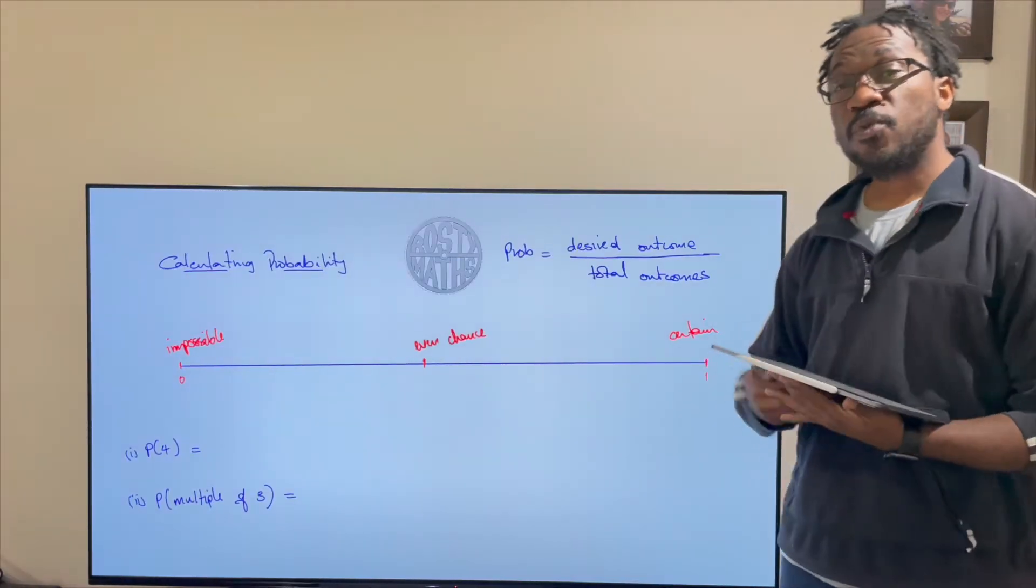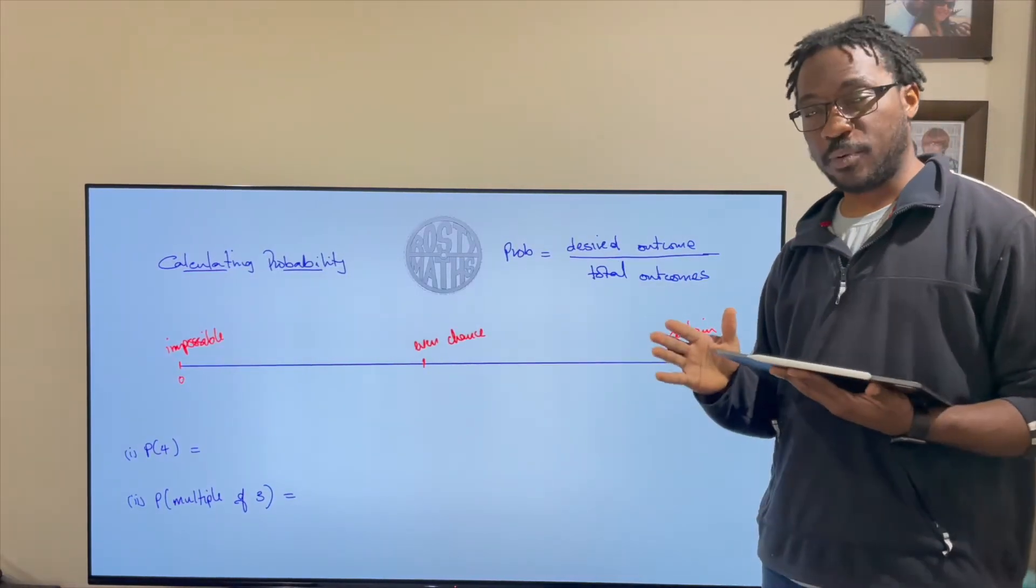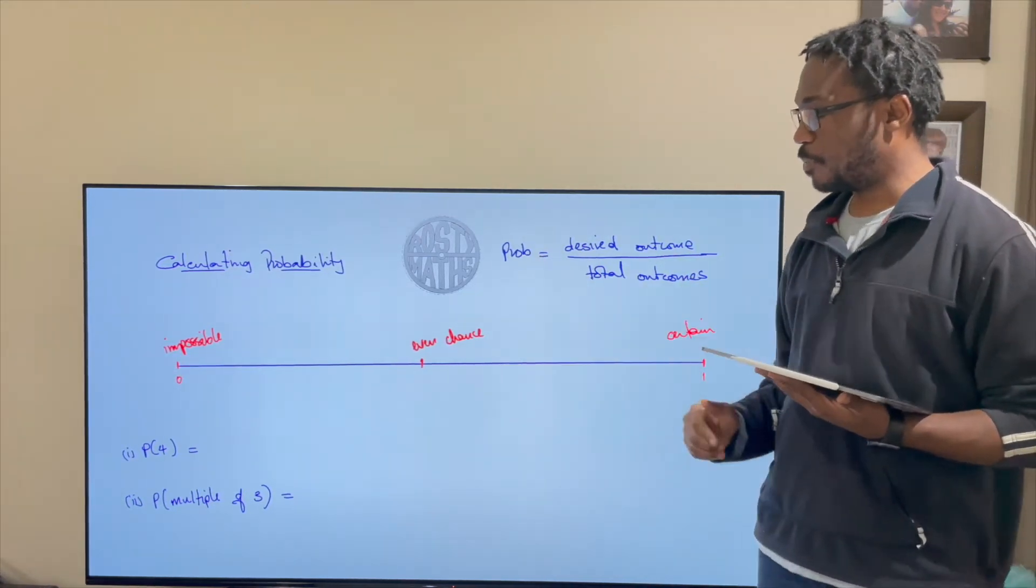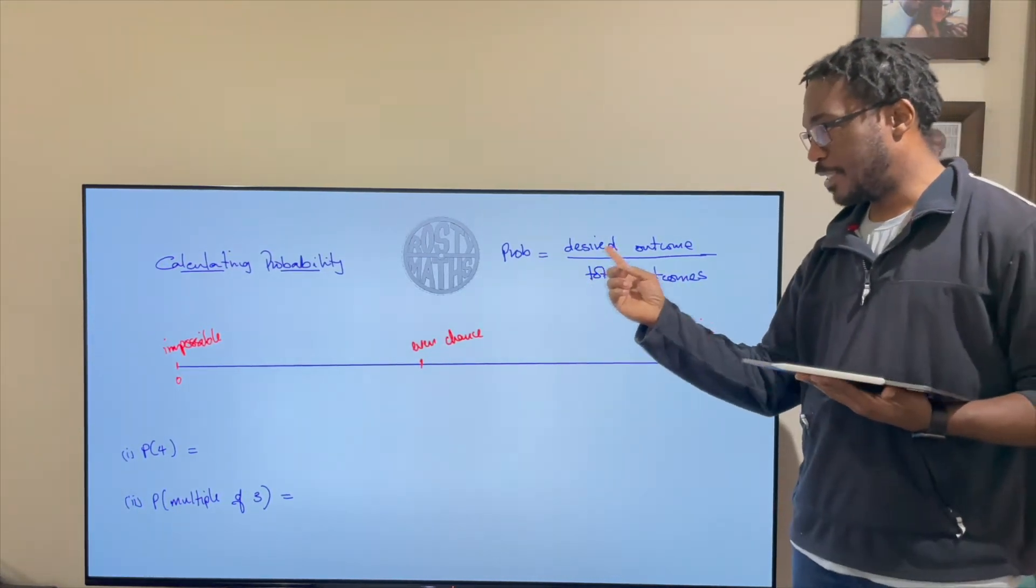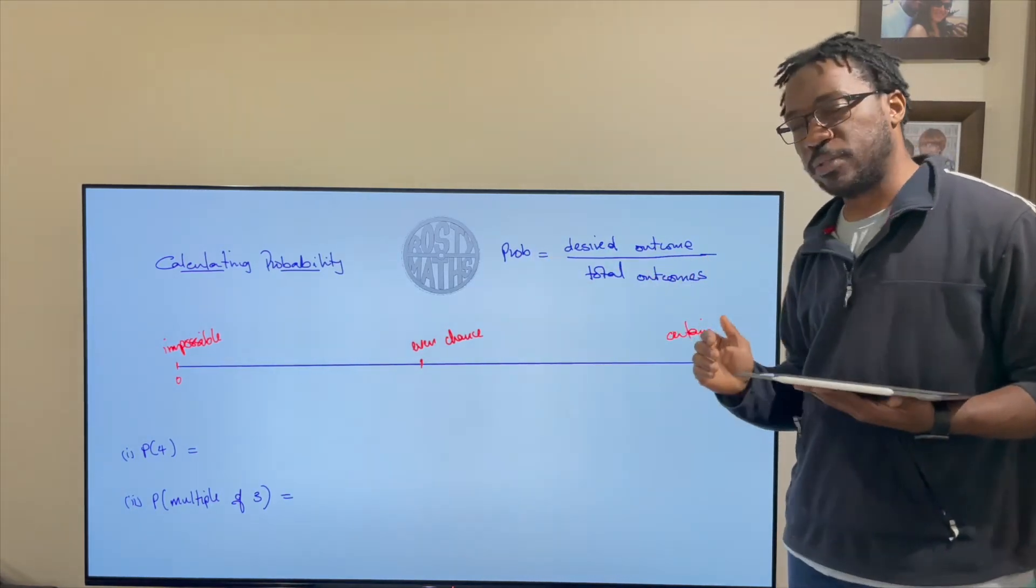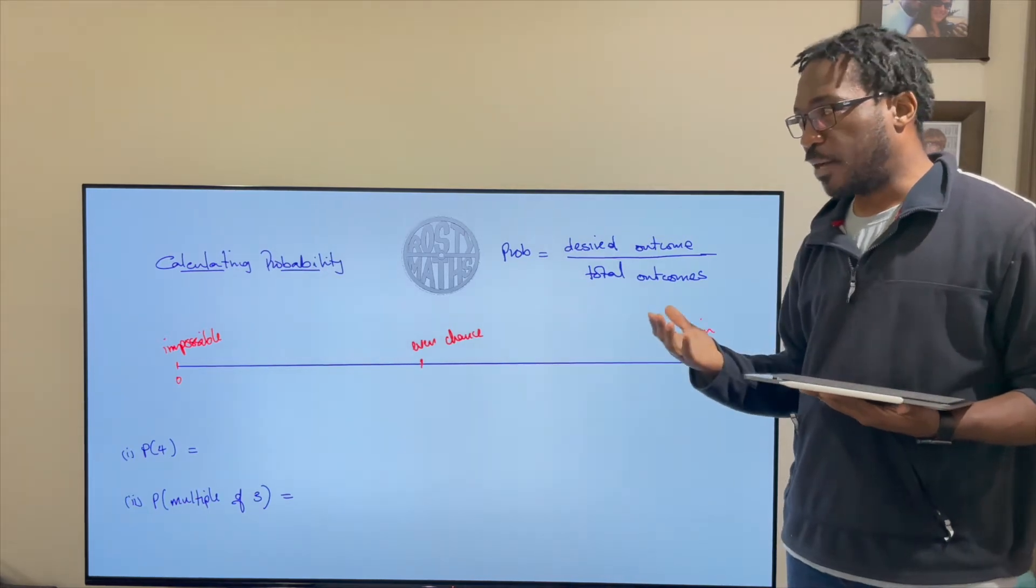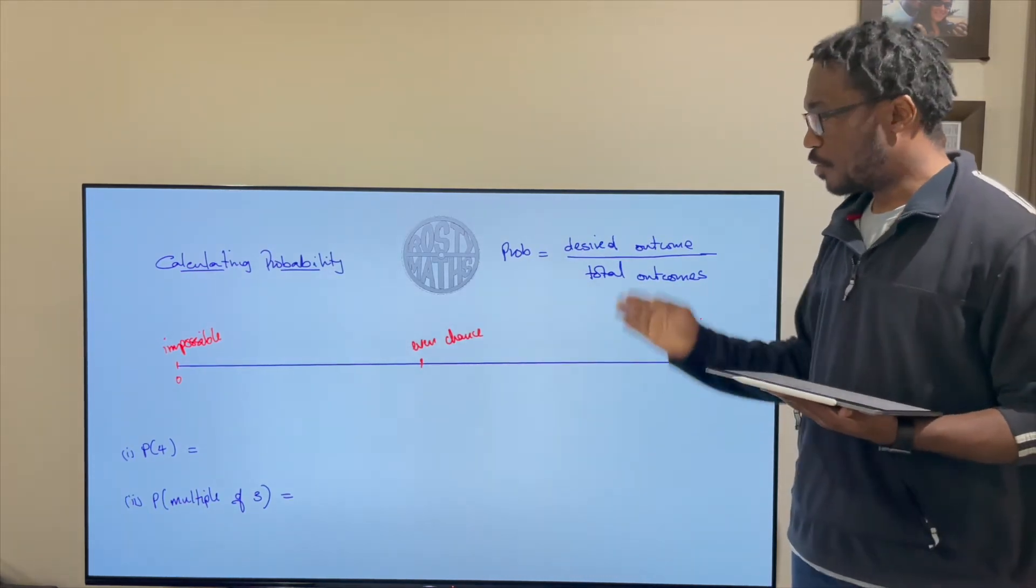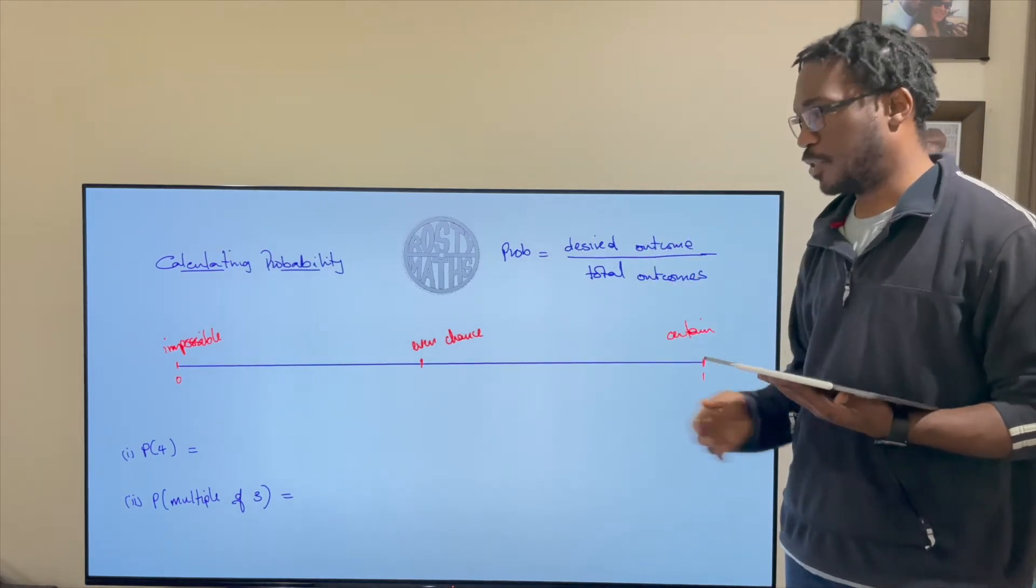So if you ever want to calculate the probability you need a little formula and the formula says that to calculate probability we divide the desired outcomes or the outcomes we're looking for divided by the total outcomes. I would say outcomes I would say events quite a lot so get used to that sort of language. So probability is desired outcomes over total outcomes.